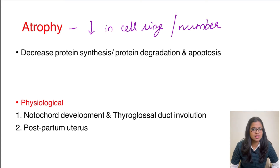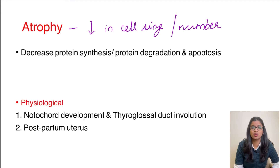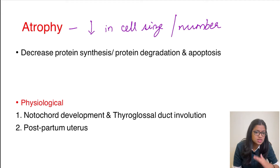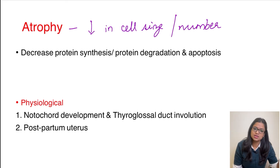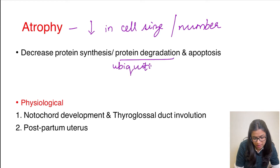How does atrophy happen? For a cell to decrease in size — the opposite of hypertrophy — either protein synthesis must go down, or the proteins already produced must be degraded. This protein degradation happens by a pathway called the ubiquitin proteasome pathway.